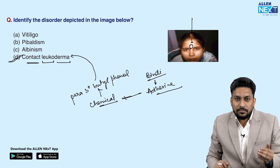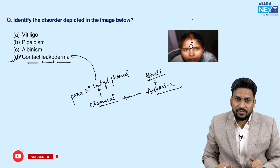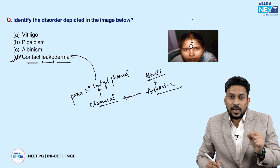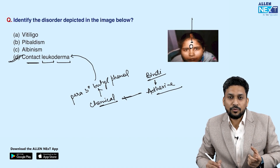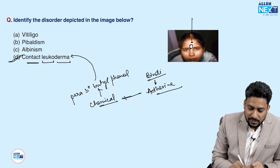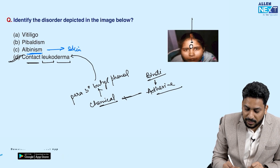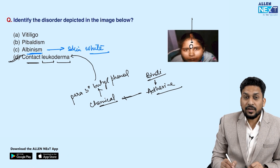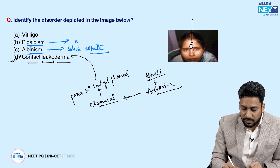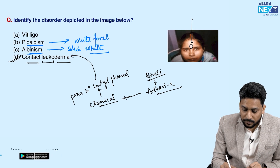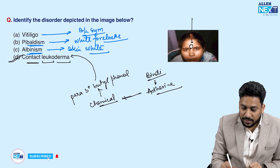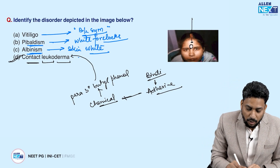Vitiligo, piebaldism, and albinism can also present with white skin, but they are not the answer. You have to look at the pattern — here the white lesion is only present over the center of the forehead where the patient applies the bindi, and the rest of the skin is normal. Unlike albinism, where the whole skin and even hair follicles become depigmented and the patient may have photophobia. In piebaldism, it is present since birth over the frontal scalp associated with white forelock. In vitiligo vulgaris, bilaterally symmetrical depigmented lesions are present. So the answer is contact leukoderma.